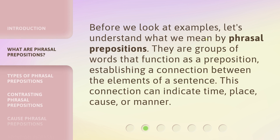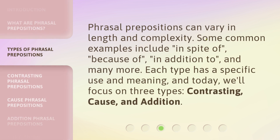Before we look at examples, let's understand what we mean by phrasal prepositions. They are groups of words that function as a preposition, establishing a connection between the elements of a sentence. This connection can indicate time, place, cause, or manner. Phrasal prepositions can vary in length and complexity. Some common examples include 'in spite of,' 'because of,' 'in addition to,' and many more. Each type has a specific use and meaning, and today we'll focus on three types: contrasting, cause, and addition.